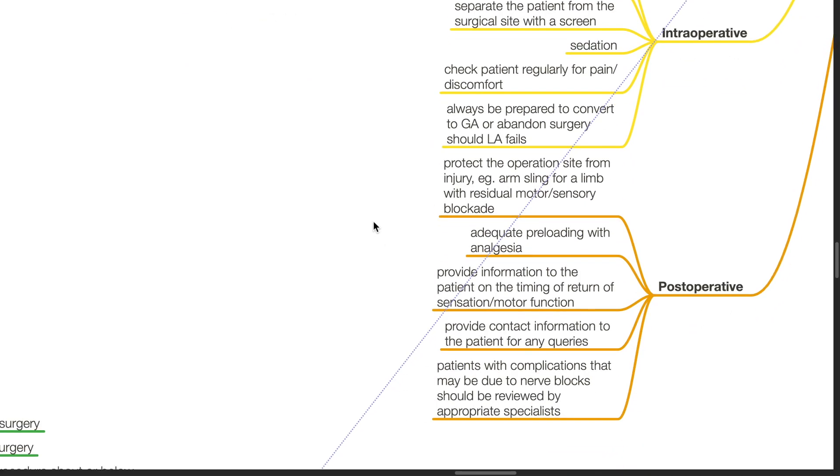Postoperative care includes protection of the operative site from injury such as using an arm sling for a limb with residual motor or sensory blockade, adequate pre-loading with analgesia, provide information to the patient on the timing of return of sensation and motor function, provide contact information to the patient for any queries that the patient might have. Patients with complications that may be due to nerve blocks should be reviewed by appropriate specialists.